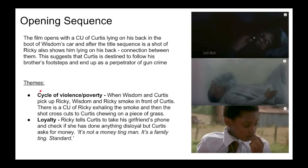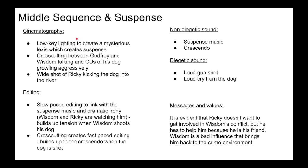Some themes in the opening sequence include cycle of violence and poverty. When Wisdom and Curtis pick up Ricky, they smoke in front of Curtis — there's a close-up of Ricky exhaling smoke, then the shot cuts to Curtis chewing on a piece of grass, showing he's learning their actions. There's also the theme of loyalty: Ricky tells Curtis to check his girlfriend's phone while he was in prison, but Curtis asks for money, and Ricky says 'It's not a money ting man, it's a family ting.' After the party scene where Wisdom and Ricky go to scare Godfrey and his dog dies, there is slow-paced editing to create suspense and dramatic irony, with a build-up of tension and loud suspense music when Wisdom shoots the dog.